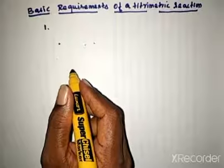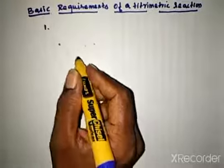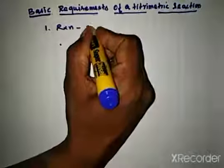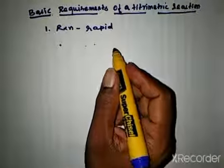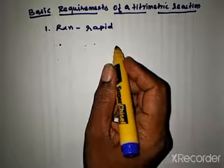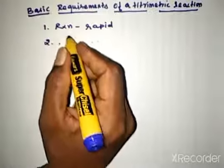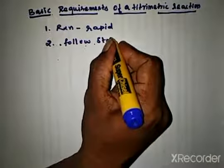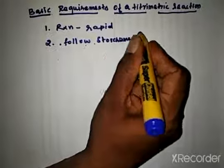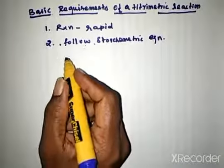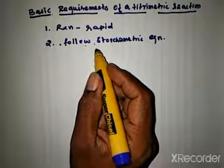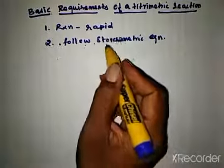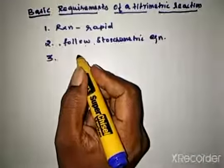The basic requirements of titrimetric analysis are: first, the reaction should be rapid — that means fast. The reaction between the two solutions should be fast so we can easily determine the result. Second, the reaction should follow a stoichiometric equation, so we can calculate exactly the amount of reacting substance.